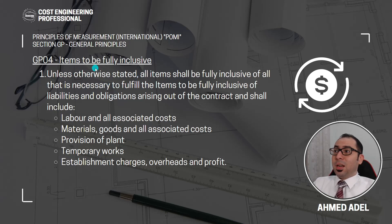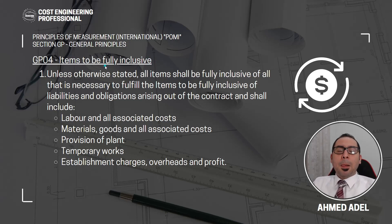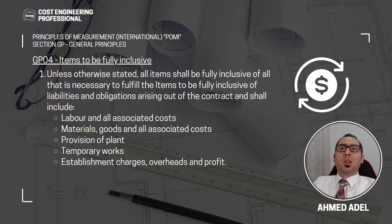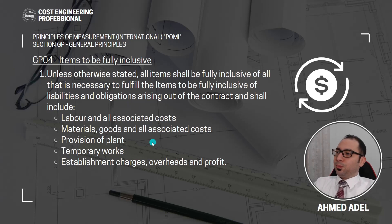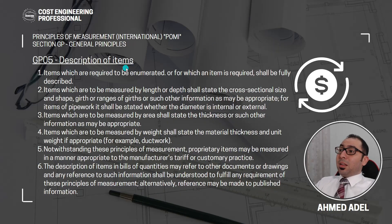This general principles section is very important to have at the beginning of your BOQ. It is not a section similar to normal BOQ sections with serial number, item description, unit, quantity, rate, and amount. It is just a statement giving the estimator guidance on how quantities are measured and how the BOQ should be priced. Anyone pricing the BOQ should read this first and will be aware that any rate shall be inclusive of everything.